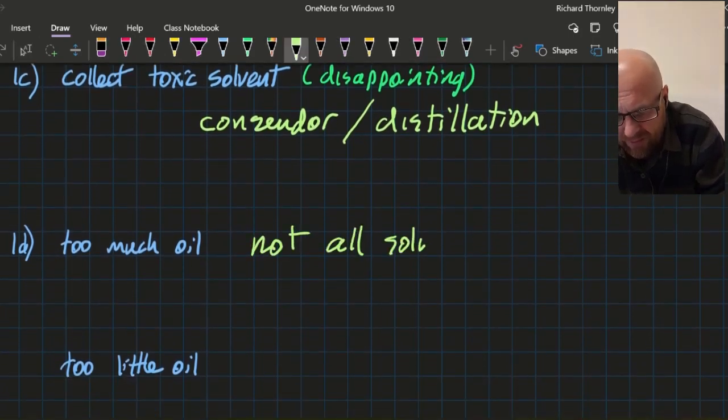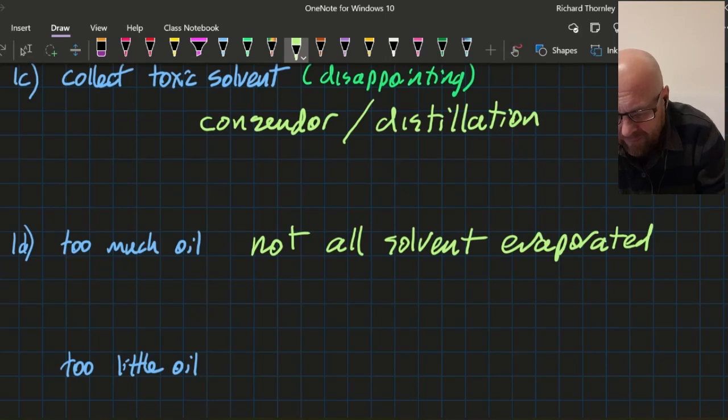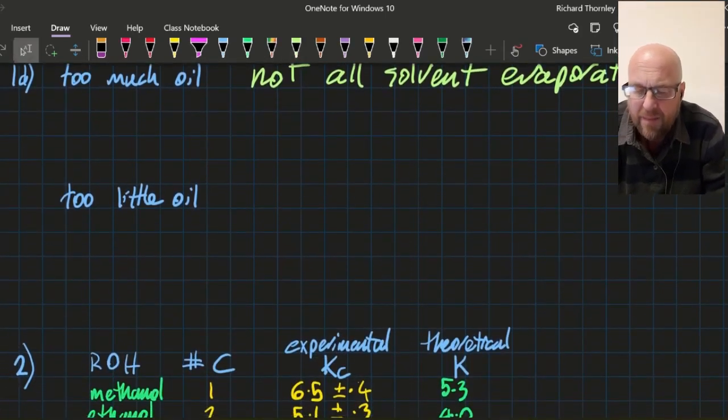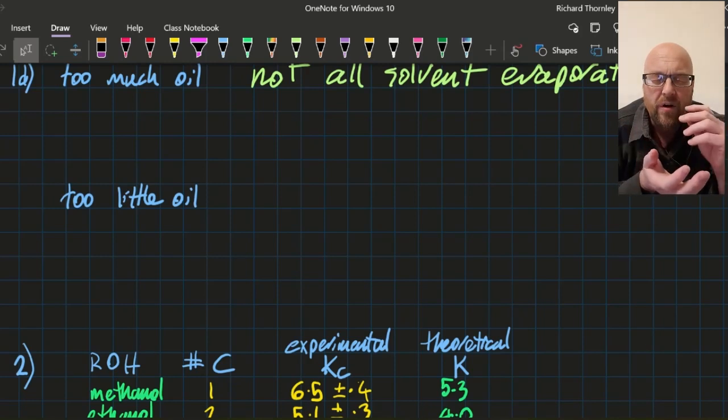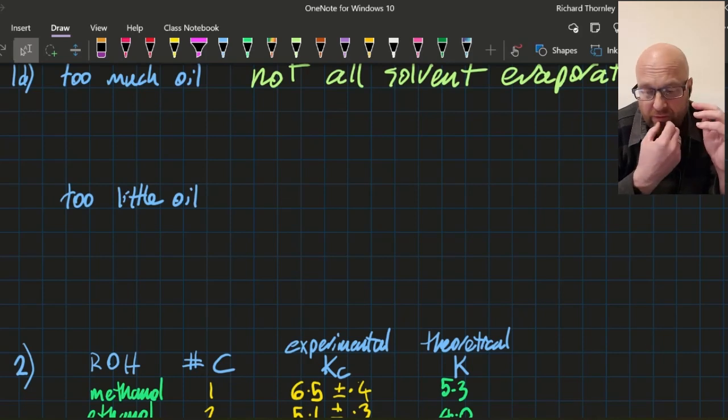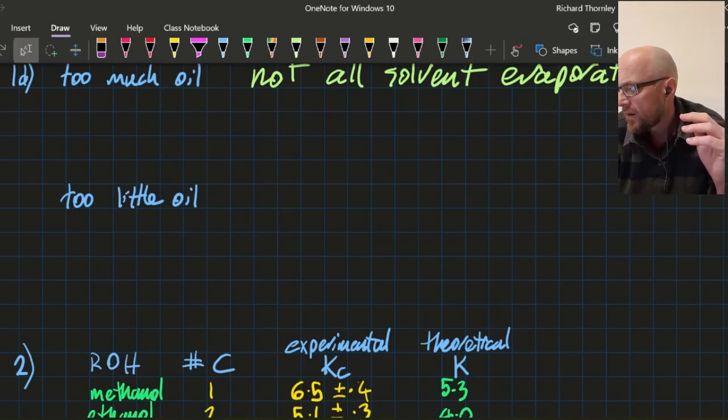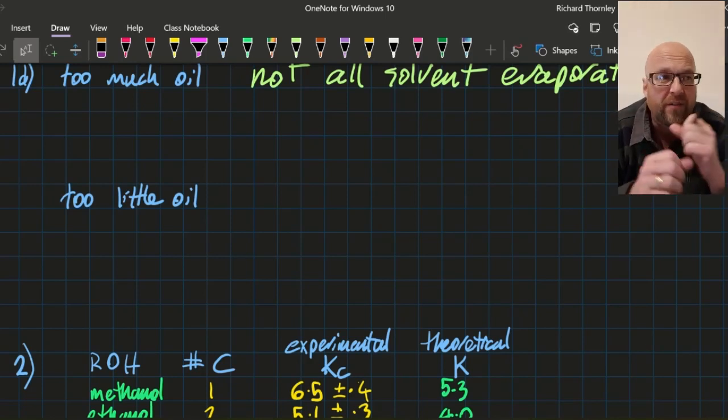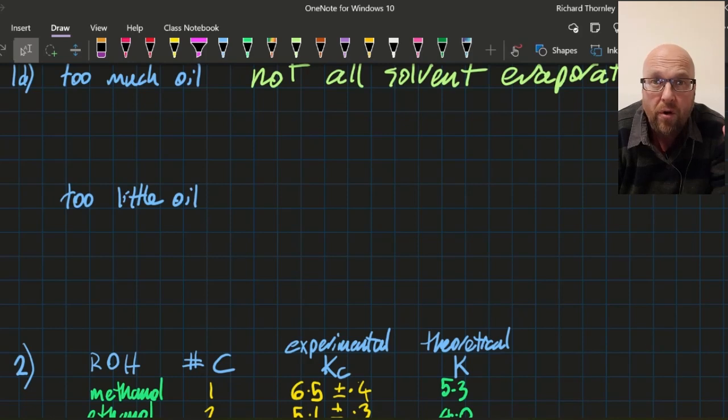If there's too little oil, well, what happened? You added the solvent, you drove it off, and there's too little oil. Maybe some of the oil was driven off with the solvent. Or not all of the oil was extracted—maybe you didn't shake it up enough, maybe you didn't crush it enough, maybe you didn't leave it to soak enough, because not all of the oil transferred into the solvent.